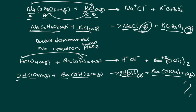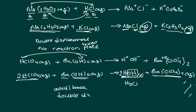This is an acid-base reaction because HClO₄ is an acid — it has an H in it — and Ba(OH)₂ is a base — it has OH in it. We ended up with water and a generic salt (barium perchlorate). So this is an acid-base reaction and it is double displacement. These are the kinds of things you must pay attention to on the exam. You must know all these different reaction types.